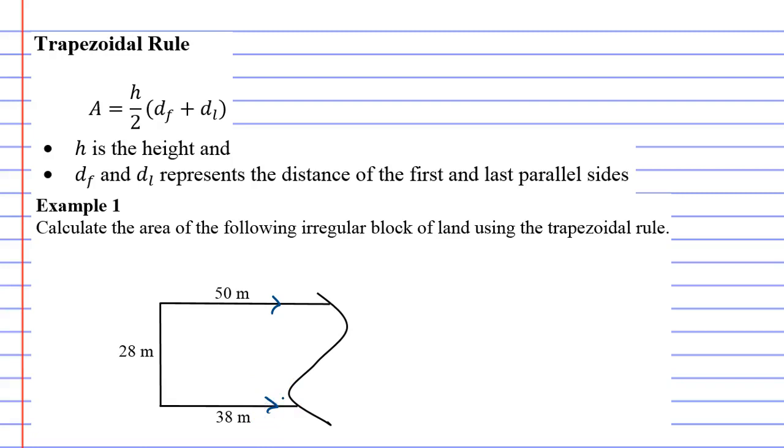If we look at our formula, area is h over 2, where h is the height. Our height for this shape is 28 meters. This length here is our height.